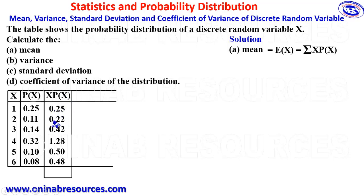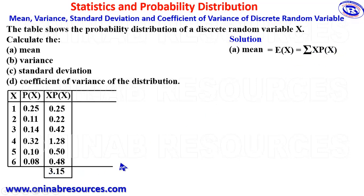So what we'll do next is to sum up the x·p(x) values. That is 0.25 plus 0.22 plus 0.42 plus 1.28 plus 0.50 plus 0.48, which gives 3.15. Since the sum of x·p(x) is 3.15, therefore the mean is 3.15.